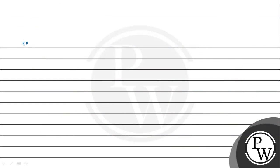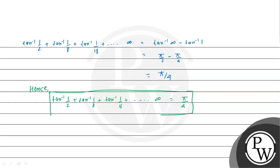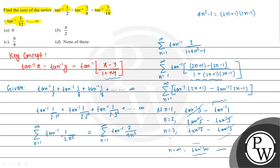So our series — tan inverse 1/2 plus tan inverse 1/8 plus tan inverse 1/18 and so on up to infinity — equals tan inverse infinity minus tan inverse 1. Now, tan inverse infinity is π/2, and tan inverse 1 is π/4. So the sum equals π/2 minus π/4, which gives π/4. This is the final answer. Looking at the options, option C is the correct choice. I hope you understand the solution. Best of luck. Thank you.